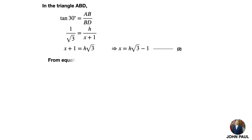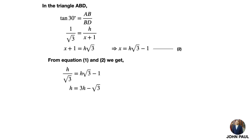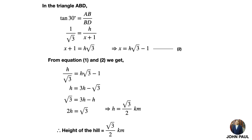Comparing equation 1 and equation 2, we get H by root 3 equal to H root 3 minus 1. Cross multiplying root 3 to the right hand side: H equals 3H minus root 3. So root 3 equals 3H minus H, which gives 2H equals root 3, therefore H equals root 3 by 2. The height of the hill is root 3 by 2 kilometers.